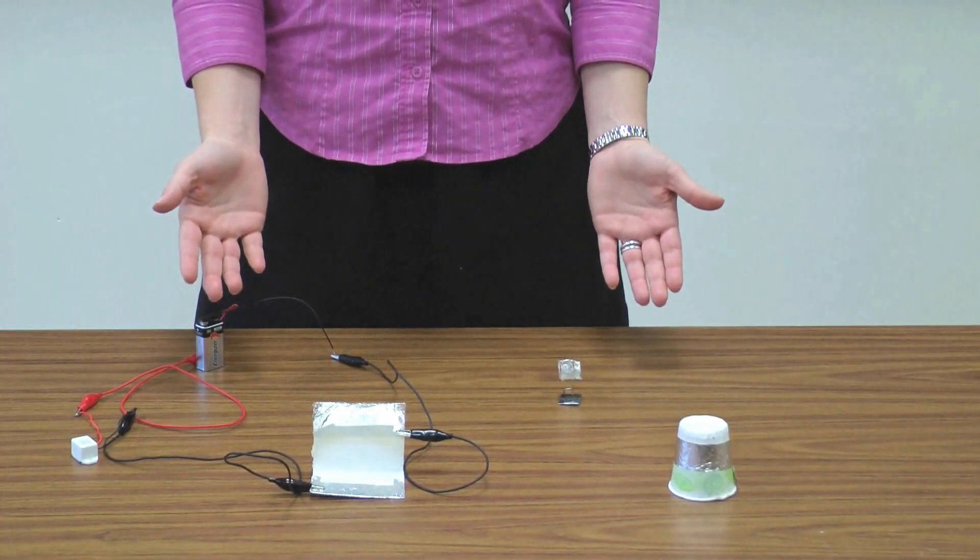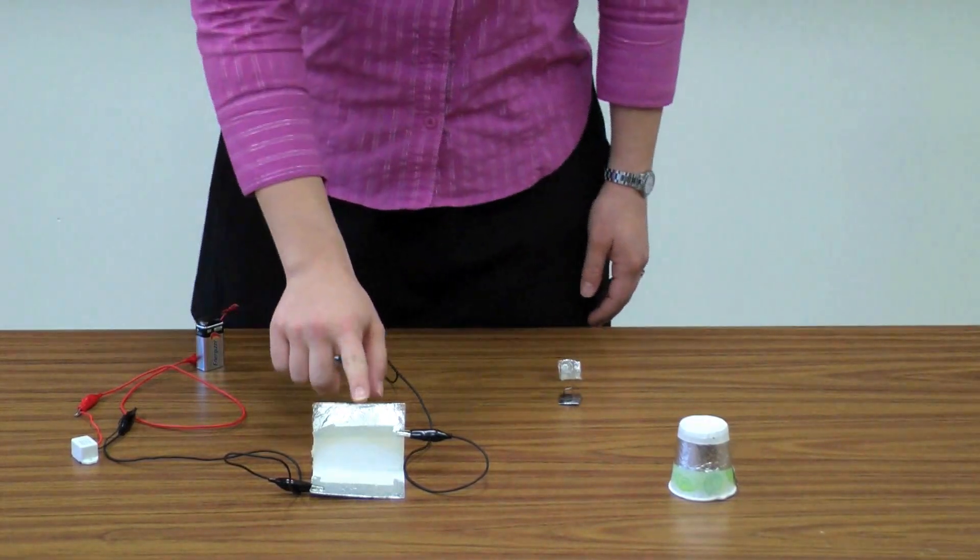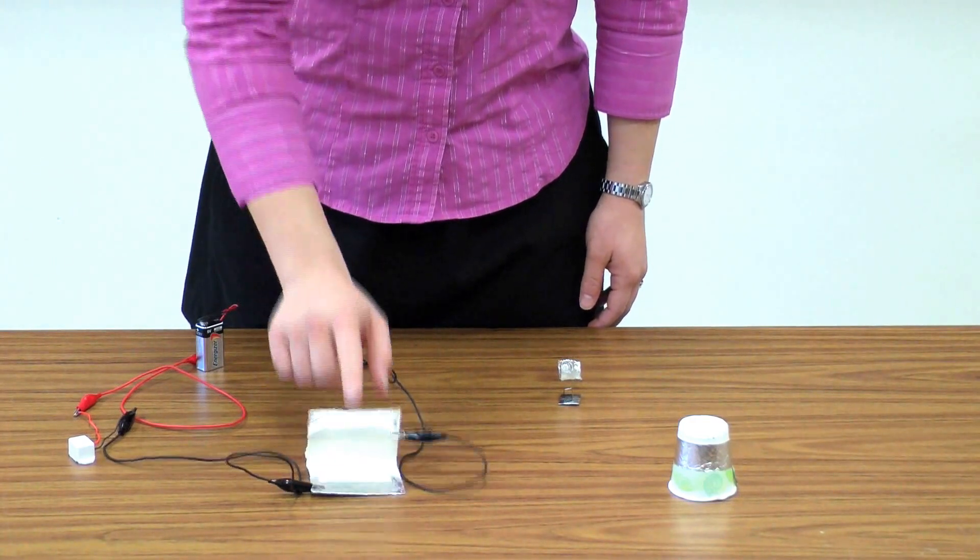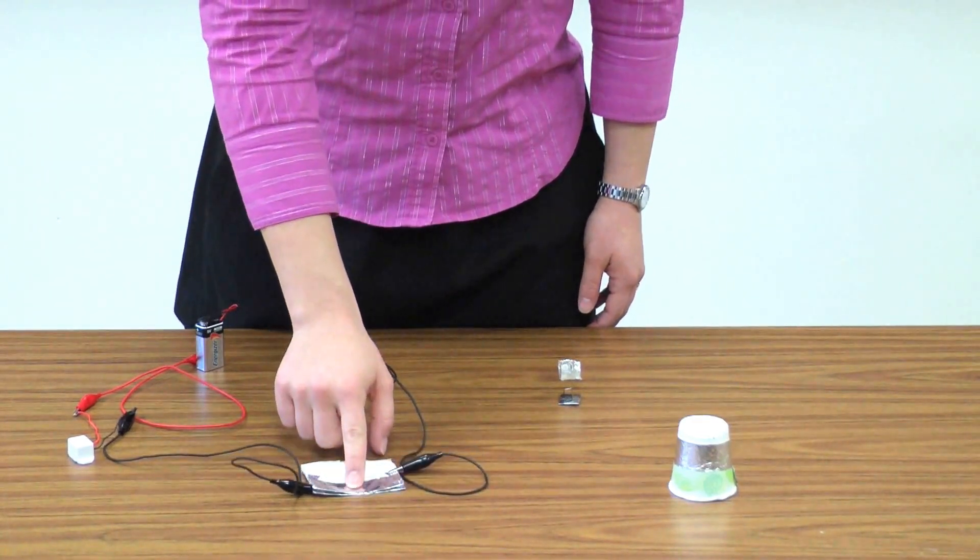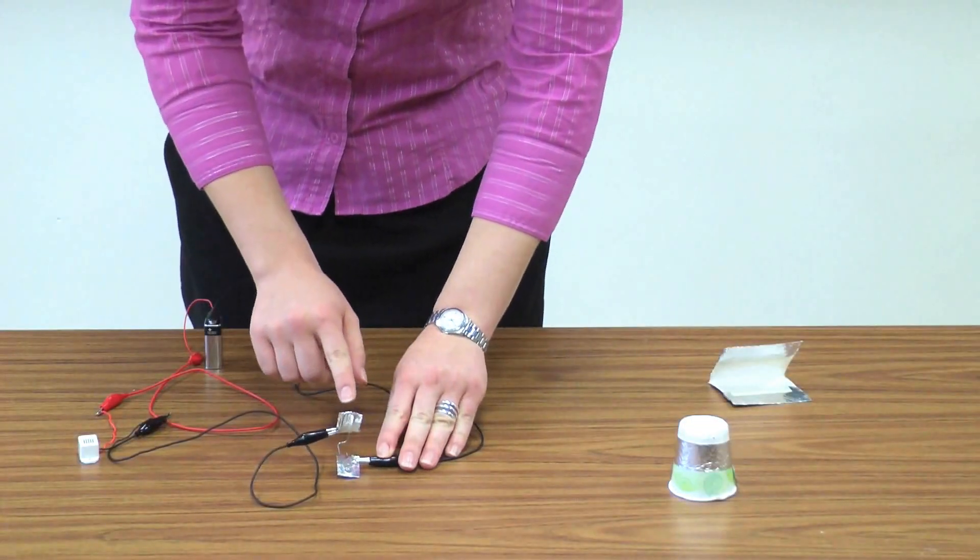Here are a few designs that your students might come up with. Each one contains the two main design elements. When you push down, two conductors come in contact and make the buzzer sound. And then when you release, the spring pops the sensor back up.